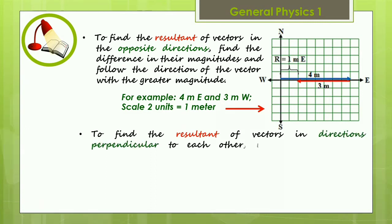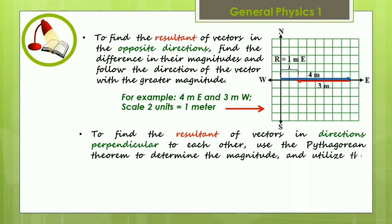To find the resultant of vectors in directions perpendicular to each other, use the Pythagorean theorem to determine the magnitude and utilize the tangent function to determine the direction.